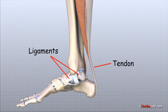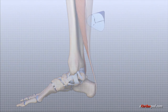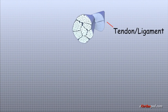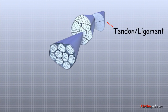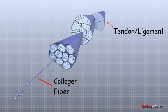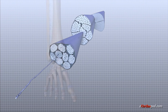Ligaments and tendons are soft tissues that attach bones to other bones and muscles to bones. Ligaments attach bones to other bones, and tendons attach muscles to bones. Both are made up of small fibers of a material called collagen. The collagen fibers are bundled together to form a rope-like structure. Ligaments and tendons come in many different sizes and shapes, and their thickness determines their strength.